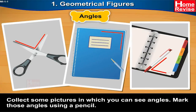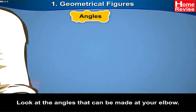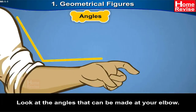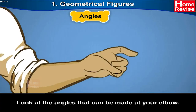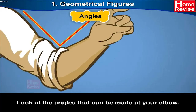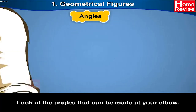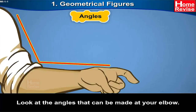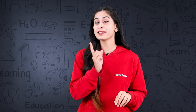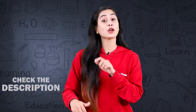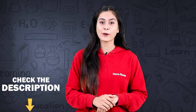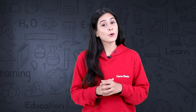Look at the angles that can be made at your elbow! Let's try it. If we put our elbow like this, here is an angle. If we move our elbow to another position, we are making a different angle. We can make many different angles with our elbow.